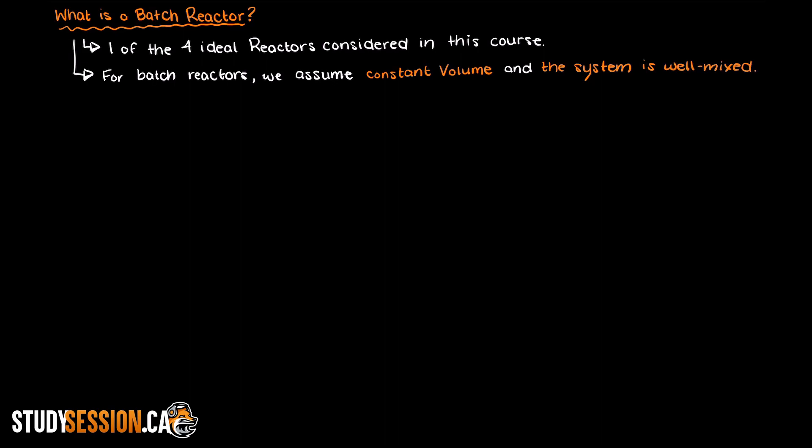Batch reactors are considered one of the four ideal reactors that we will consider throughout this course. This means that we assume it's perfect in some certain way. For a batch reactor, we can assume constant volume and that the system is always well-mixed. This ideal assumption is just to make calculations easier, as non-ideal reactors are often quite complicated. But the fundamentals of non-ideal reactors are often very similar to ideal reactors, however they are just simplified to give students an understanding without getting too specific to any one non-ideal reactor.